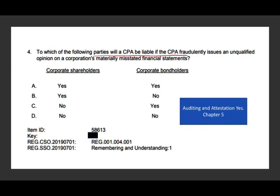Question four: to which of the following parties will the CPA be liable if the CPA fraudulently issued an unqualified opinion on a corporation's materially misstated financial statements? There's fraud here, and the question is who can sue you if you commit fraud? The short answer is anyone. Corporate shareholders can sue you because they're owners. Corporate bondholders can also sue you — they are affected too. So the answer is both shareholders and bondholders. They must prove intent to deceive, justifiable reliance on your statement, damages, and that it was material — which the question already tells us.